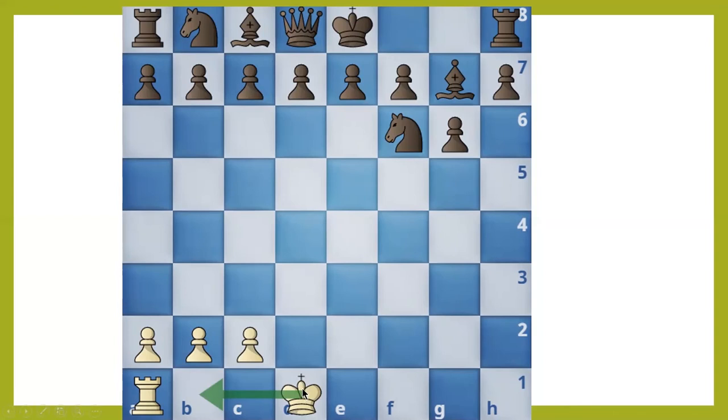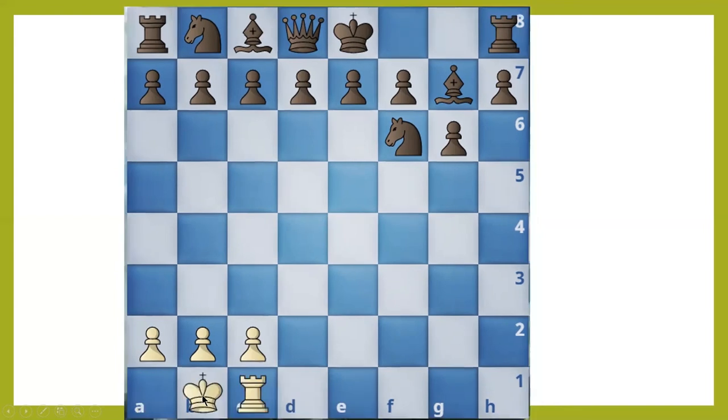white's king wants to castle king's side. In castling, king moves two steps to the rook and rook moves other side to the king. Look in such a way.